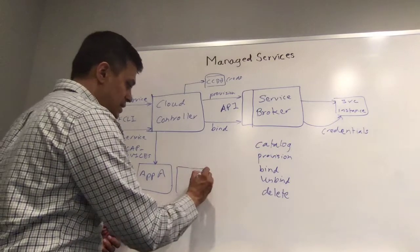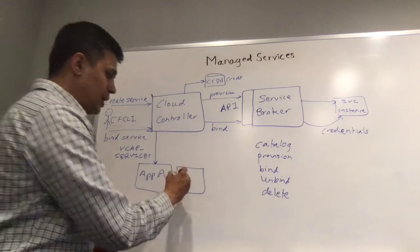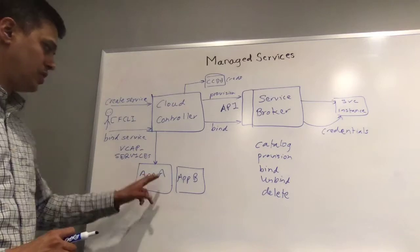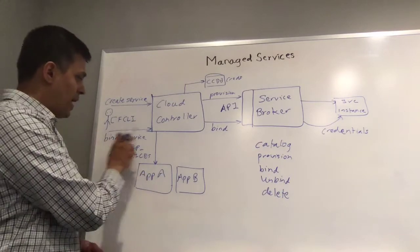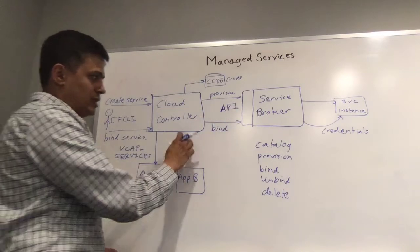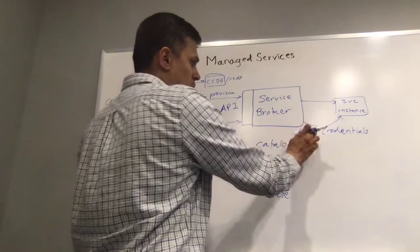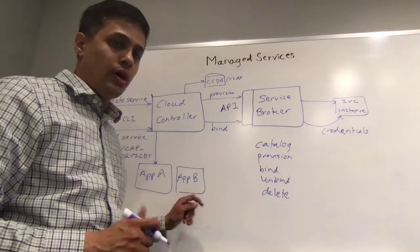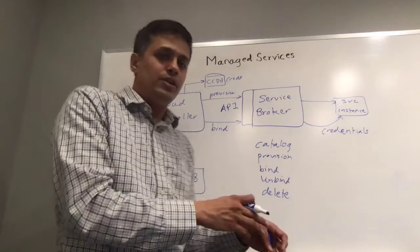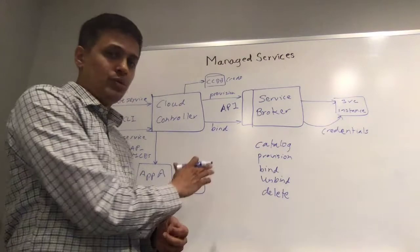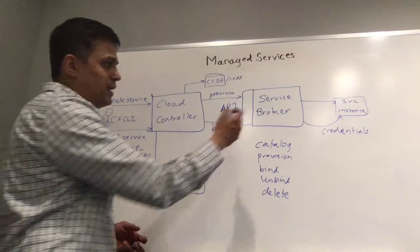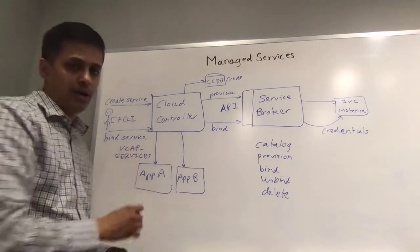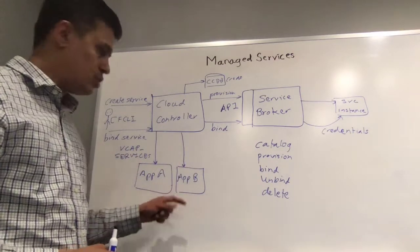The service instance is not app-specific — it can be used to connect to multiple applications. For example, app B can also be connected to the same service instance to which app A is connected. When the bind command is issued for app B, the cloud controller will again issue the bind command on the service broker. The service broker may choose to create new credentials for app B or reuse the existing credentials. Either way, the credentials are returned to the cloud controller, which uses the VCAP_SERVICES environment variable to ingest those credentials into the application.